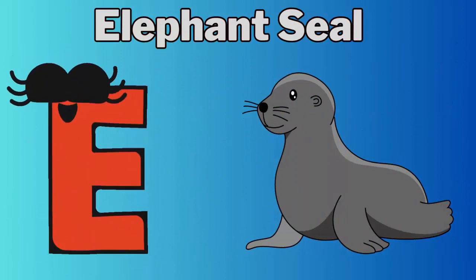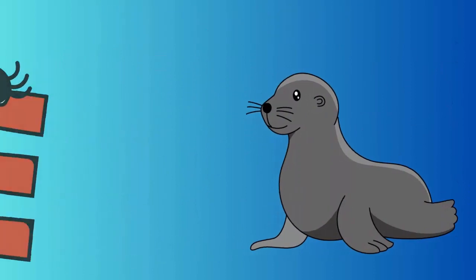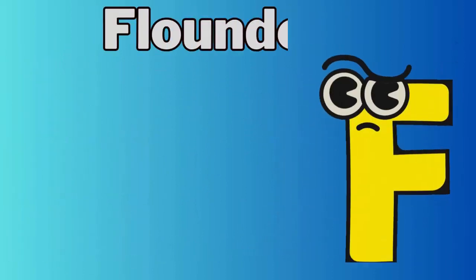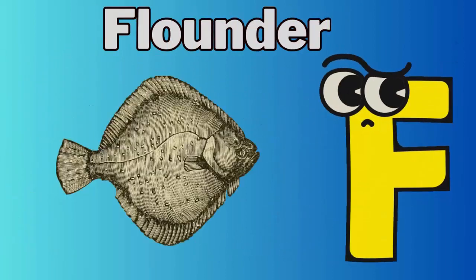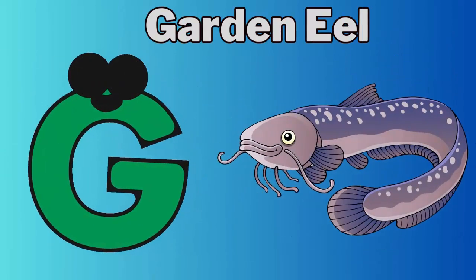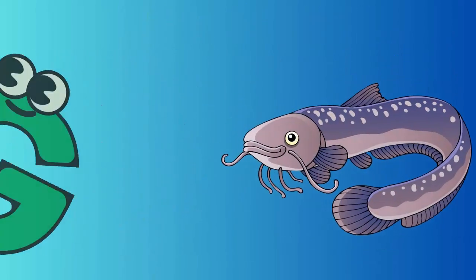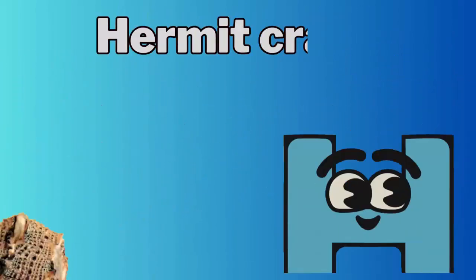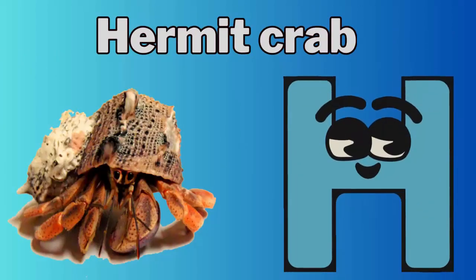E. E for elephant seal. F. F for flounder. G. G for garden eel. H. H for hermit crab.